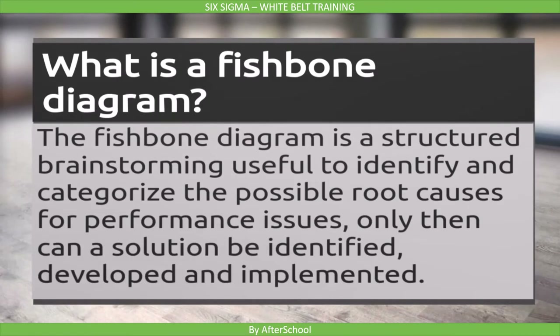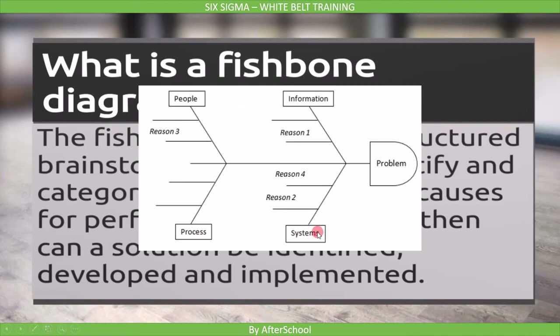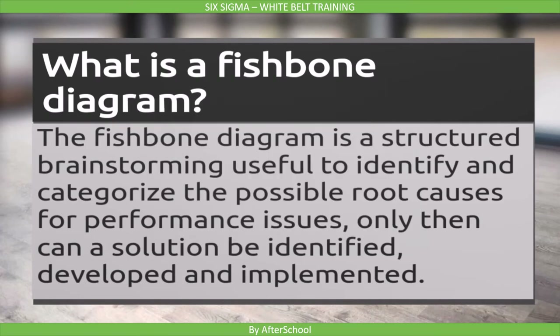What is a fishbone diagram? The fishbone diagram is a structured brainstorming tool useful to identify and categorize the possible root causes for performance issues. Only then can a solution be identified, developed, and implemented. It is used to draw out possible causes for an effect or problem. It is known as a fishbone diagram because the completed diagram resembles the skeleton of a fish. However, it is also known as a cause-and-effect or Ishikawa diagram, typically used in team problem solving. It's also used in conjunction with the 5-Y analysis, which is described later in this chapter.